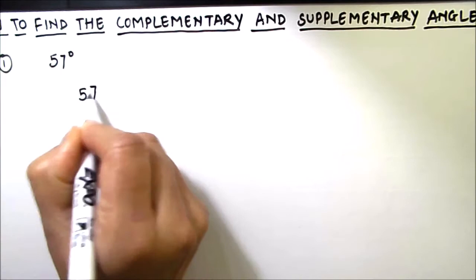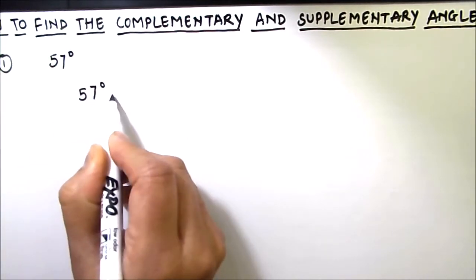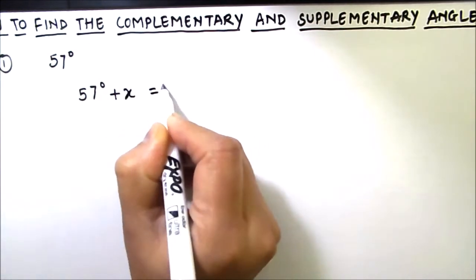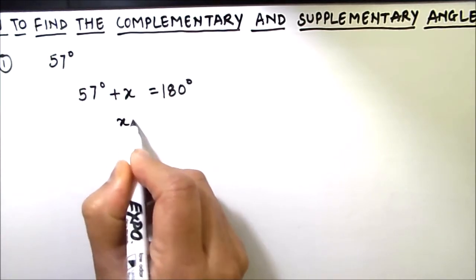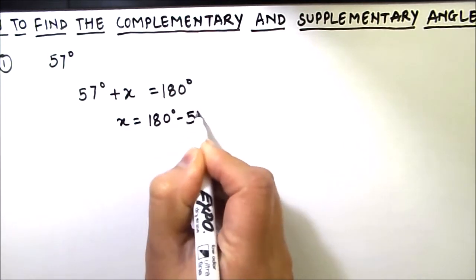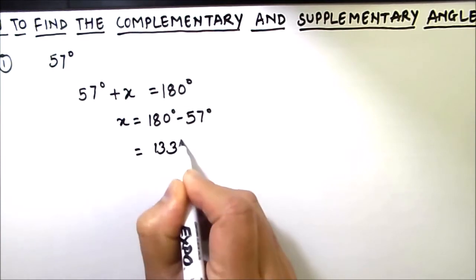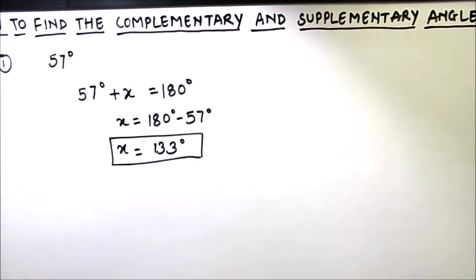For that, we are going to add the two angles which is 57 degrees plus some other angle, and their sum is equal to 180 degrees. We need to find the value of x, so x will be 180 degrees minus 57 degrees, which is equal to 133 degrees. So x is equal to 133 degrees. For finding the supplement of an angle, we need to subtract the angle from 180 degrees.